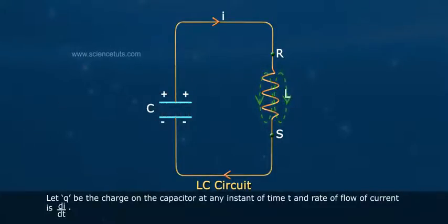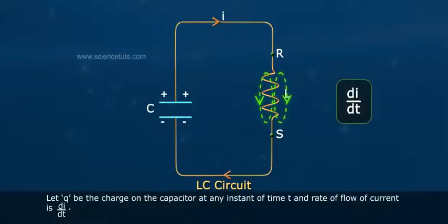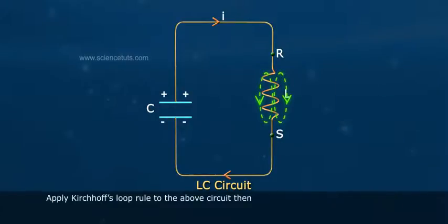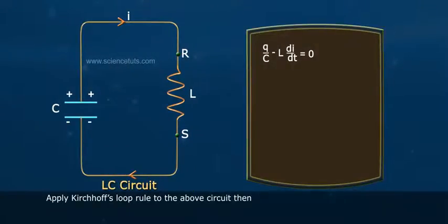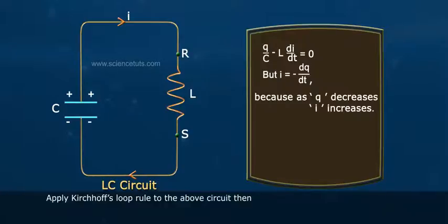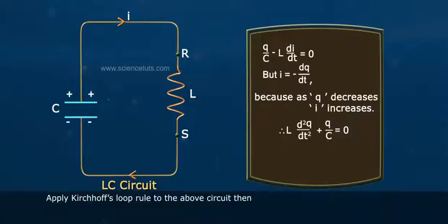Let Q be the charge on the capacitor at any instant of time T, and rate of flow of current is dI/dT. Applying Kirchhoff's loop rule to the circuit: Q/C minus L·dI/dT equals 0. But I equals minus dQ/dT, because as Q decreases, I increases. Therefore, L·d²Q/dT² plus Q/C equals 0.